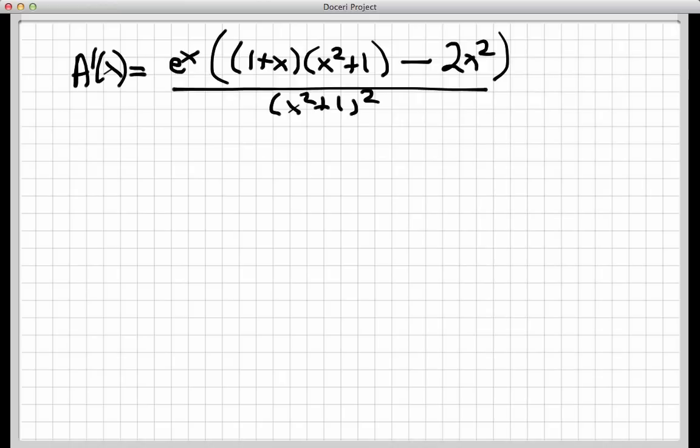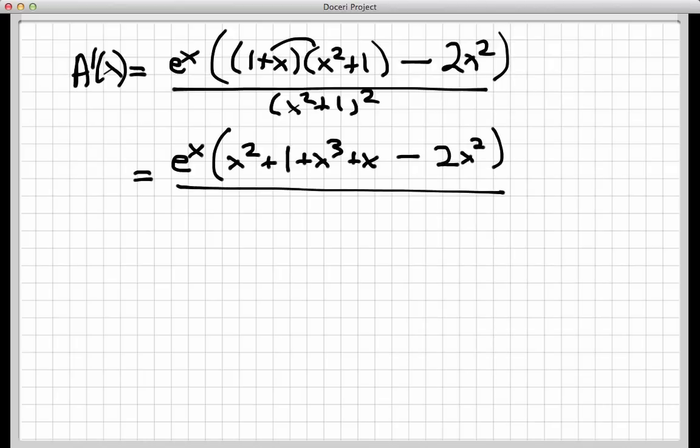There's not much left to do here. I just need to work out the algebra that's on the inside of the big parentheses here. If I foil the first two terms together, I get x squared plus 1 plus x cubed plus x. I'm subtracting off a 2x squared here. And let's not forget the denominator of the big fraction. And now I can just collect like terms in the top. I have an x cubed term. I see an x squared minus a 2x squared, so that's minus 1x squared plus x plus 1.